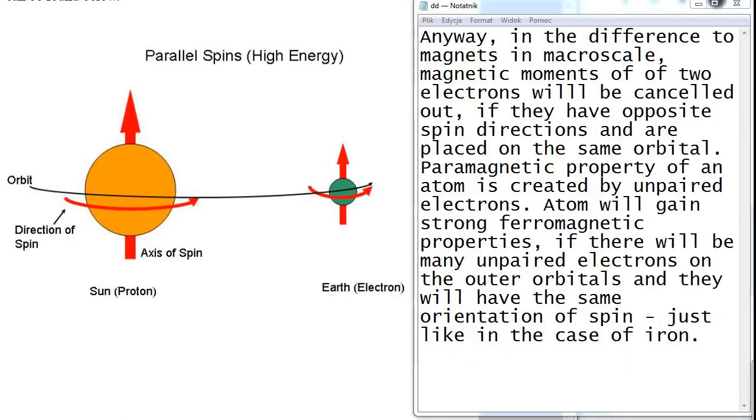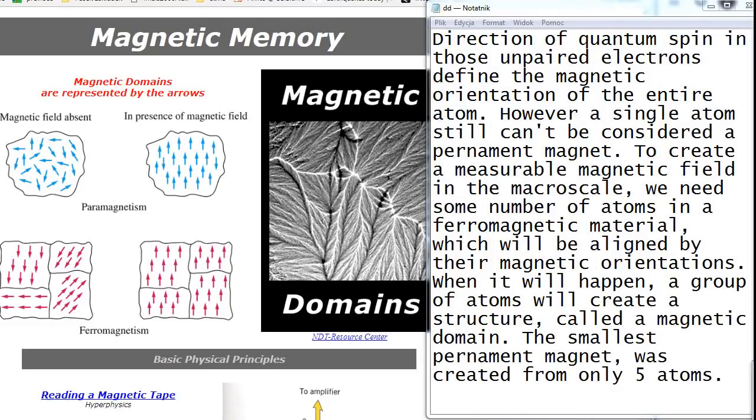Anyway, in the difference to magnets in macro scale, magnetic moments of two electrons will be cancelled out if they have opposite spin directions and are placed on the same orbital. Paramagnetic property of an atom is created by unpaired electrons. Atom will gain strong ferromagnetic properties if there will be many unpaired electrons on the outer orbitals and they will have the same orientation of spin, just like in the case of iron. Direction of quantum spin in those unpaired electrons define the magnetic orientation of the entire atom.